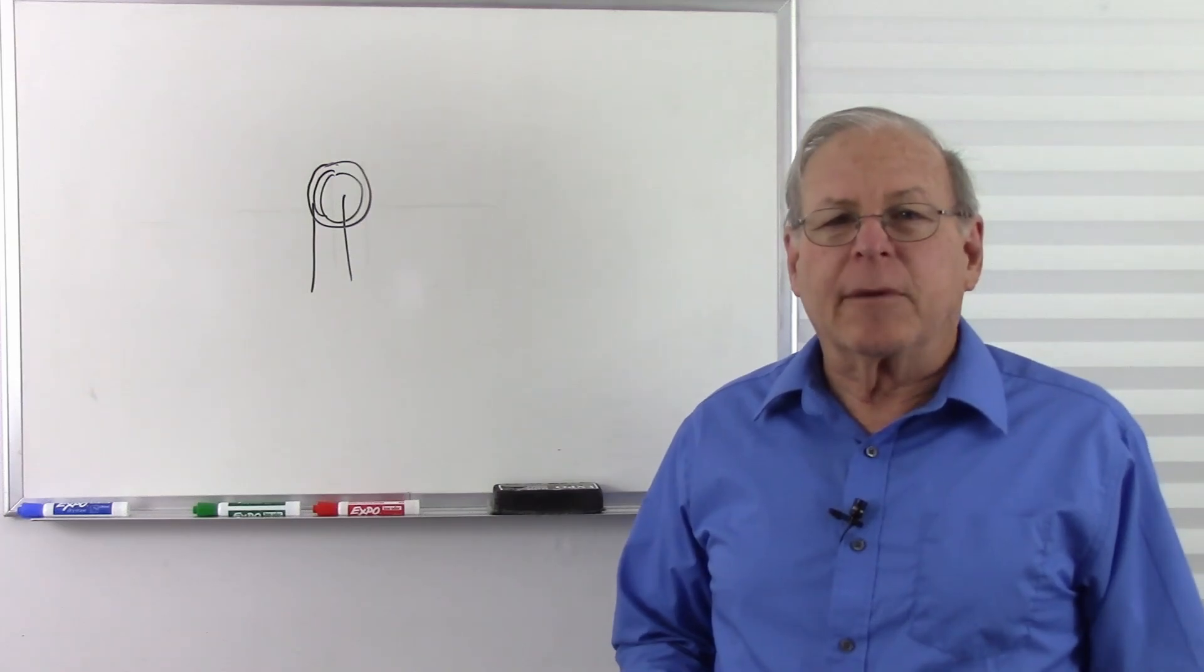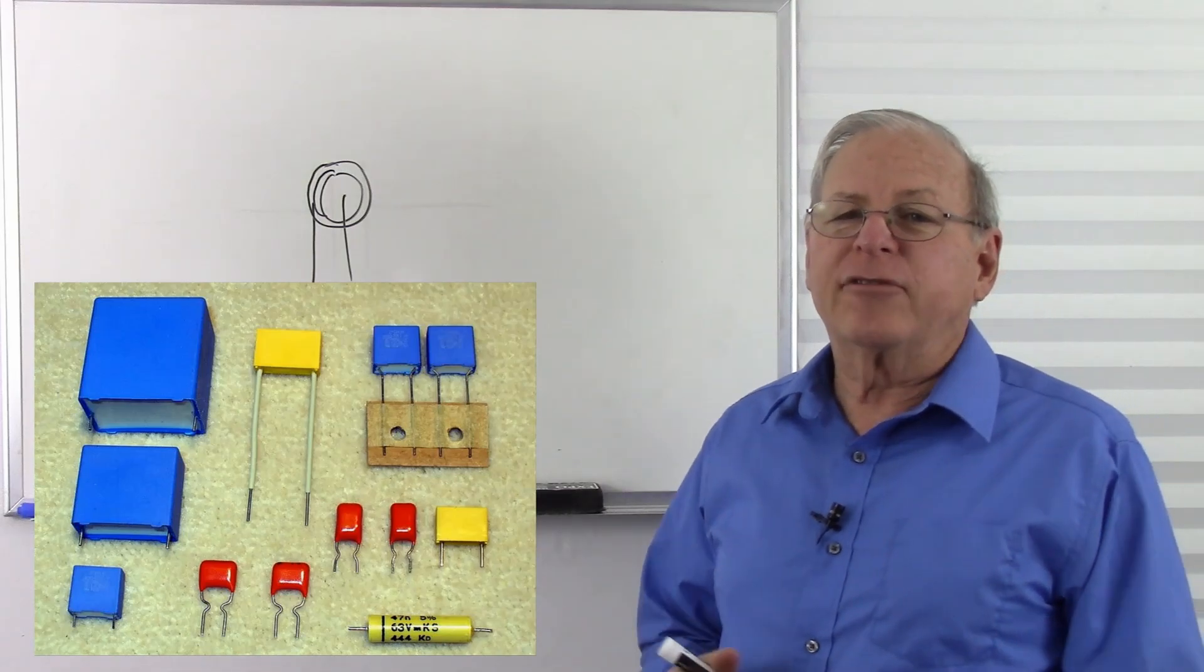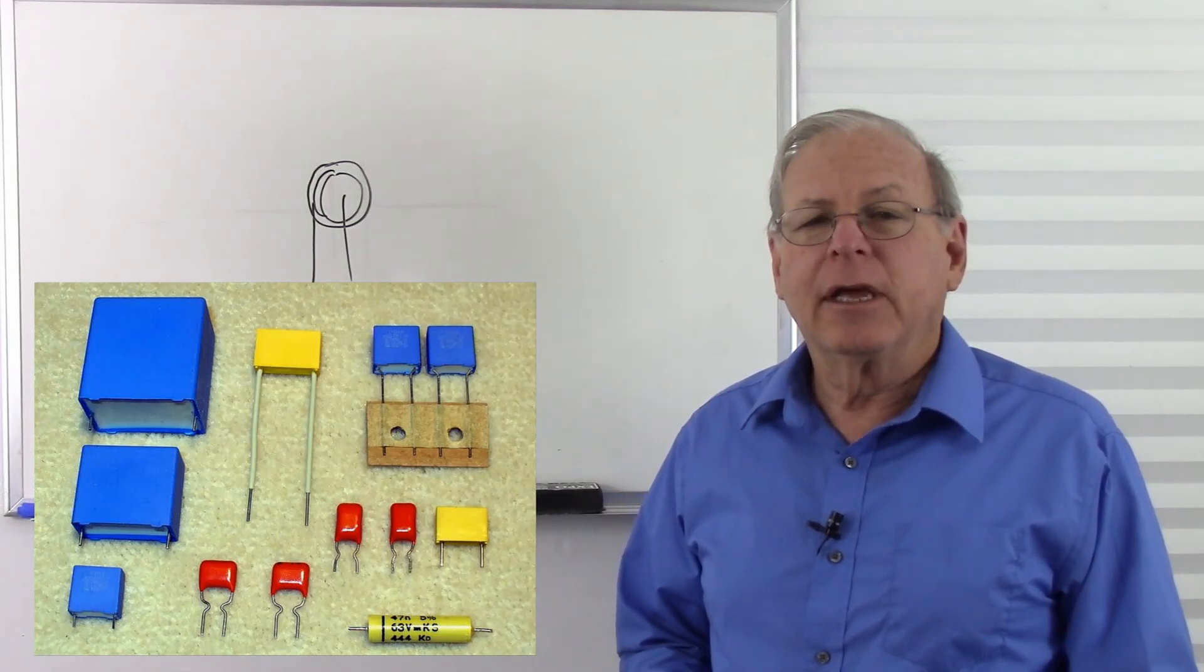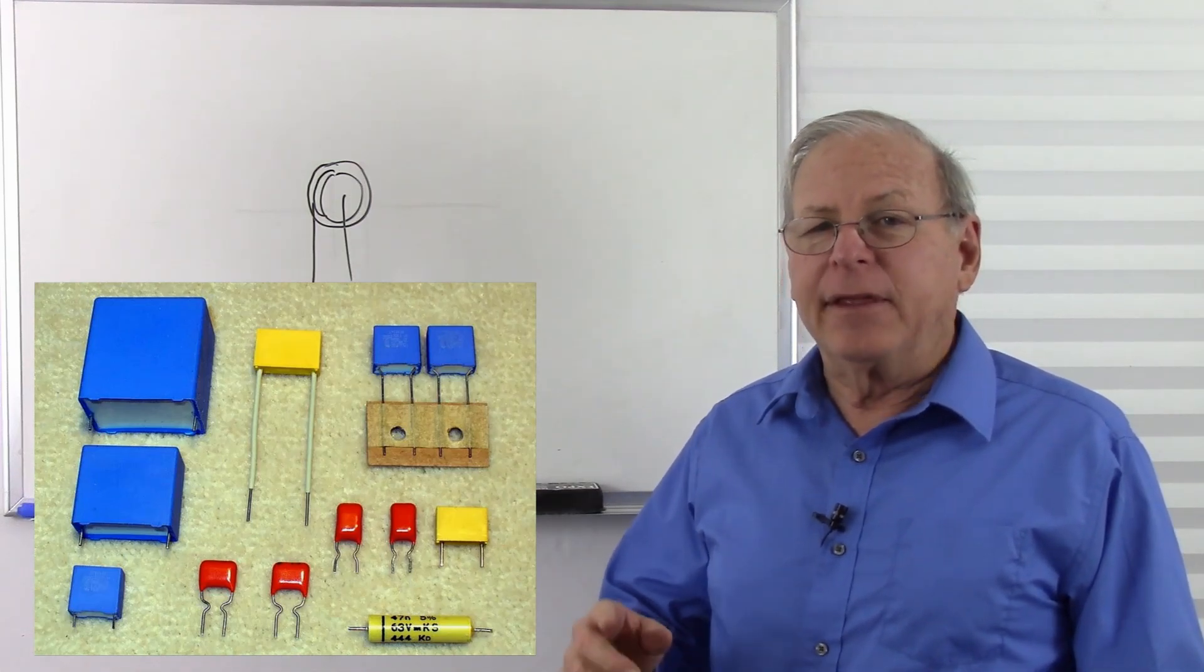Another type of common capacitor is the plastic film capacitor. These are made with sheets of plastic film, such as polyester or polystyrene, and they are coated with some kind of metal, usually aluminum, and then they are rolled up.